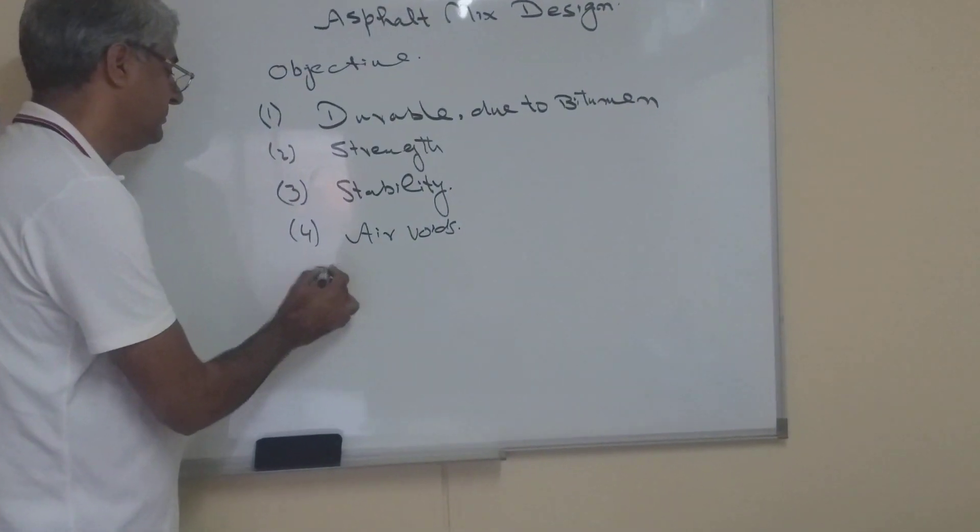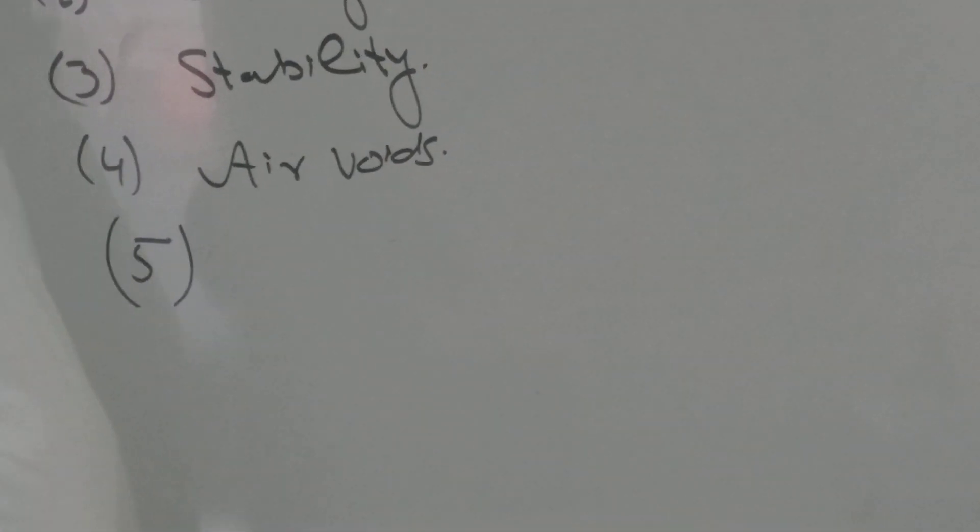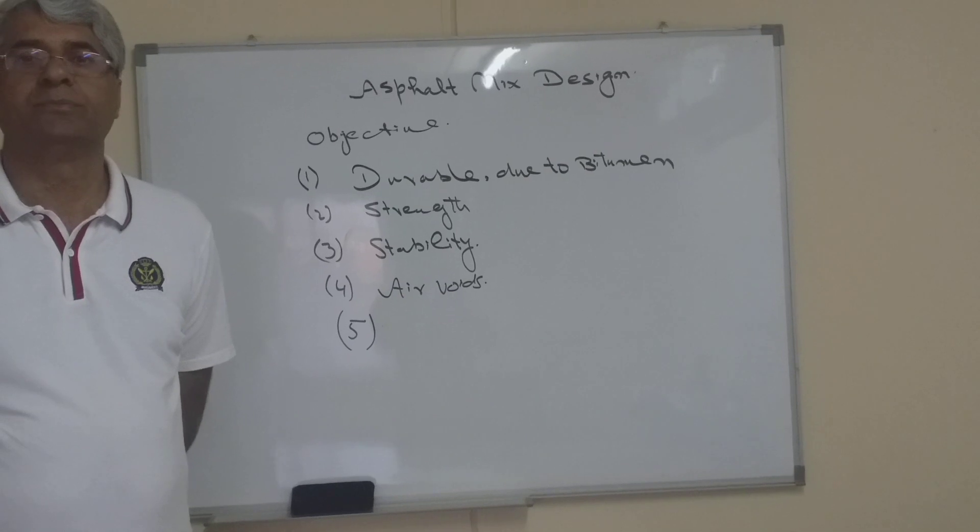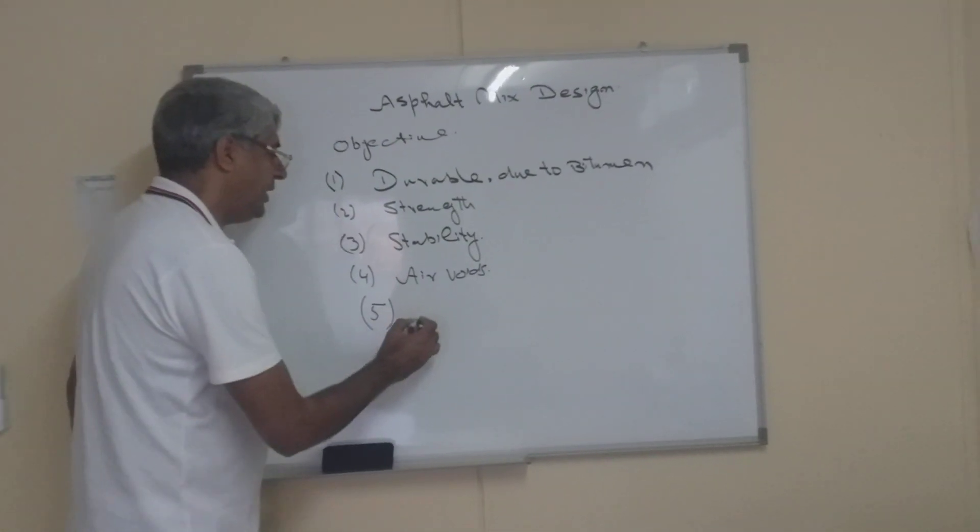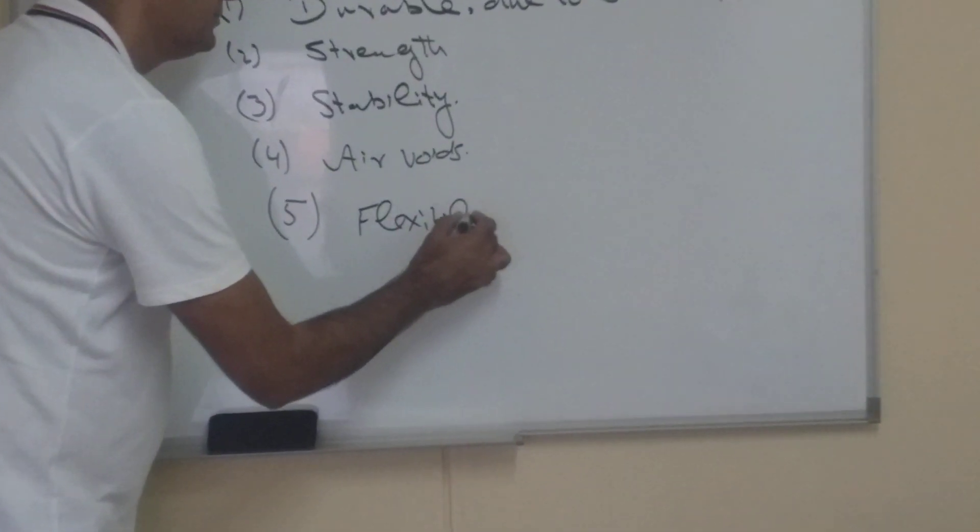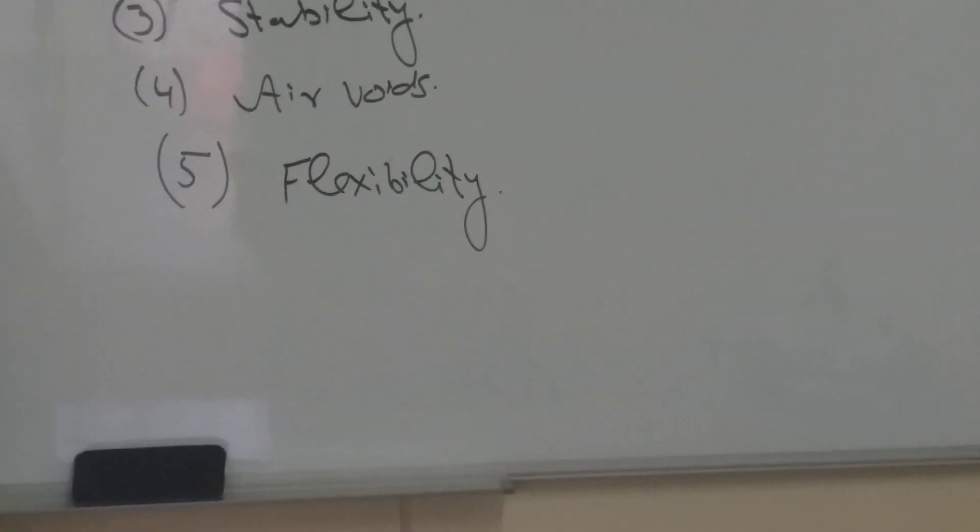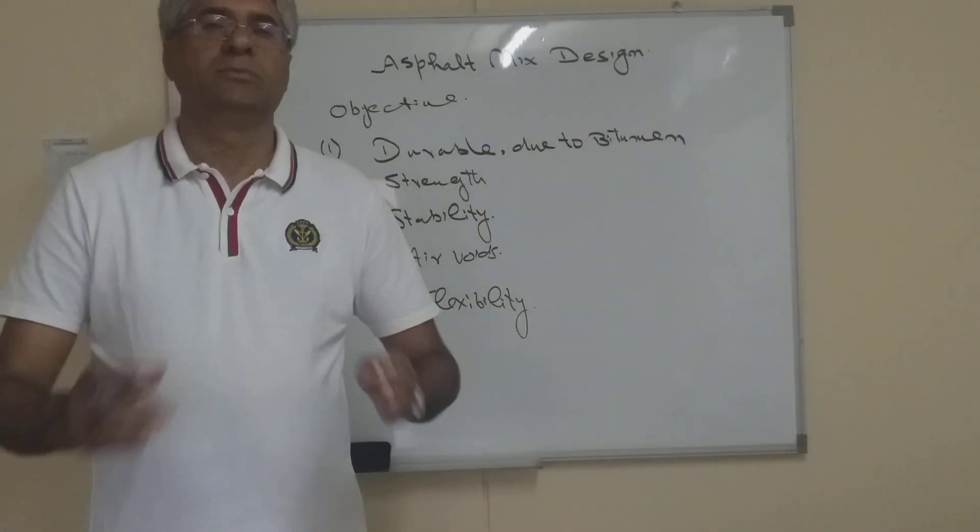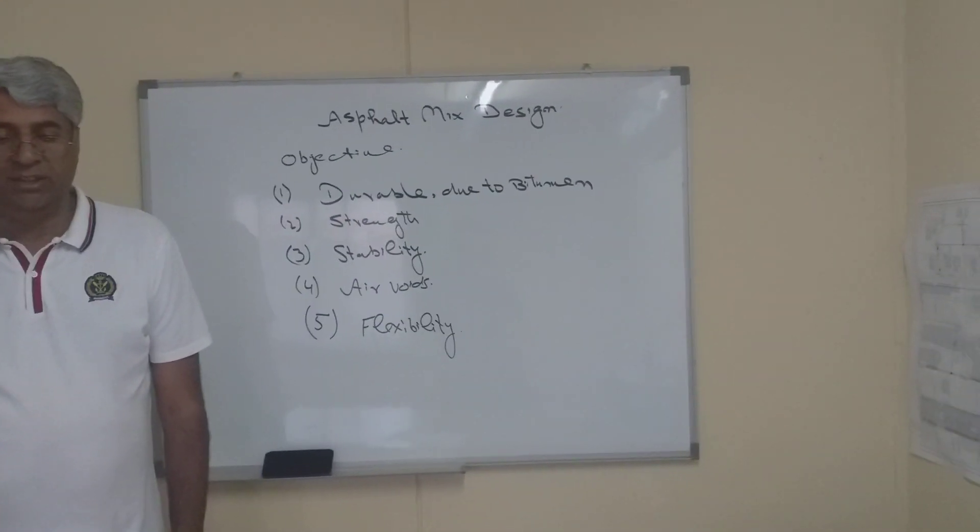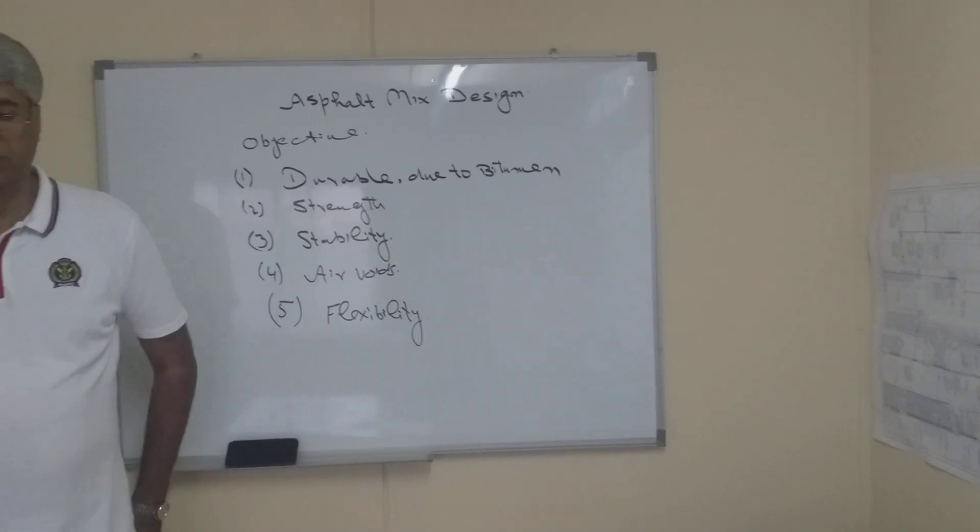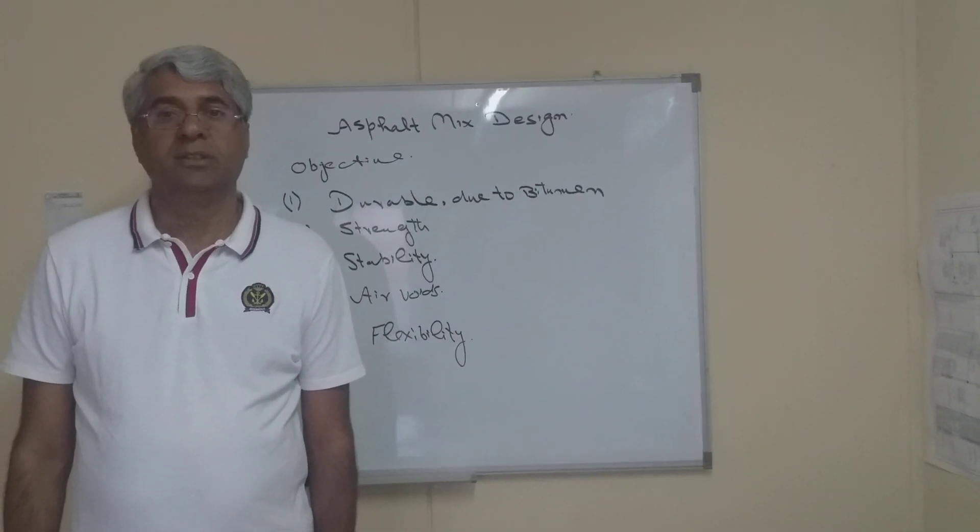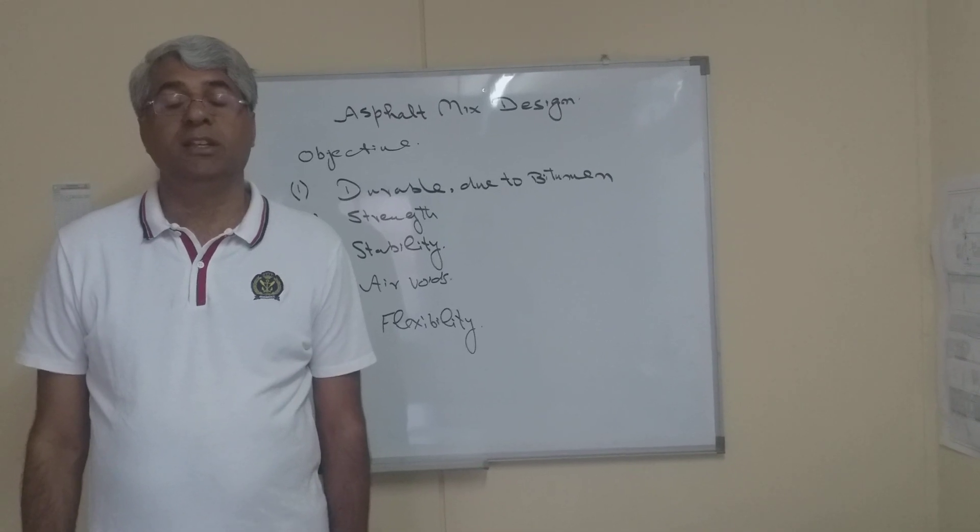Fifth one: we will study one property in detail later known as the flow value. Flow is related with the flexibility. So we should have to obtain this property of flexibility and also it possess the property to maintain its shape when the imposed load is reduced.